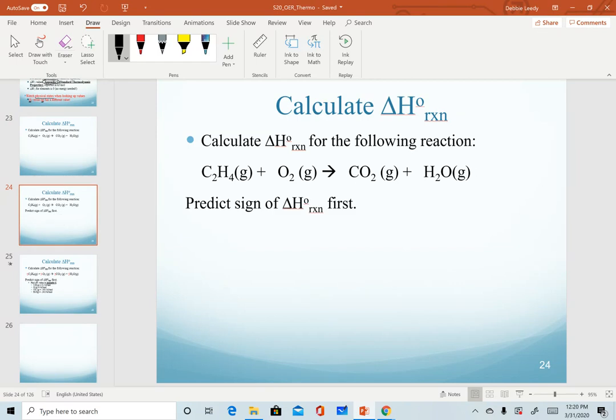All right, welcome back. For this example, what you should have gotten for your coefficients is a 1 for the C2H4, 3 for oxygen, and 2 for both of our products. So that's our balance. Predicting sign, hopefully you recognize that this is a combustion reaction. When we think of combustion, we think of fire or explosions. That should give off a lot of heat, so we predict a negative sign for it.